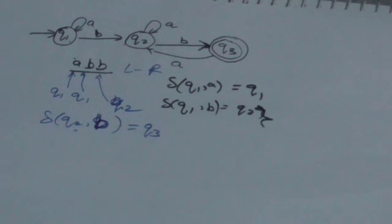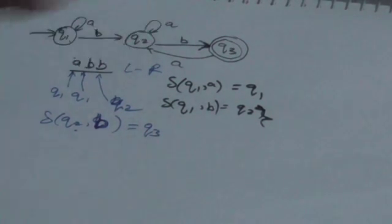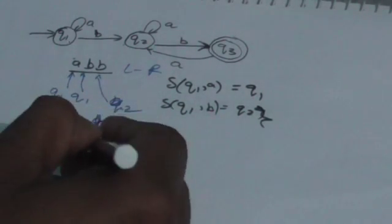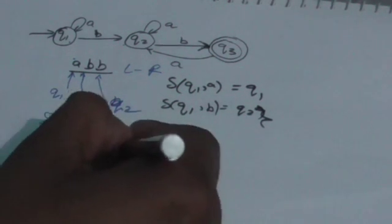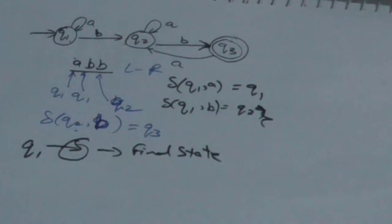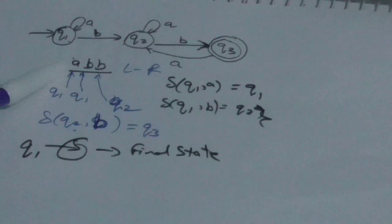When a machine reads any string and after reading that string it reaches the final state, then that string is accepted by the automata. So whenever we apply a string to the initial state q1 and the machine ends in a final state, the string is accepted. In this case, after reading 'abb', the machine reached q3, so 'abb' is accepted by this automata.